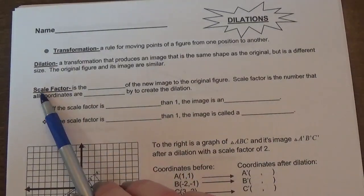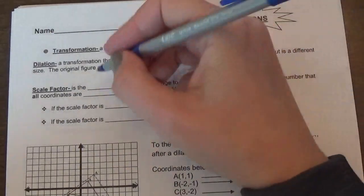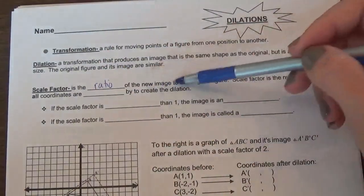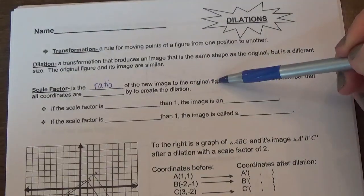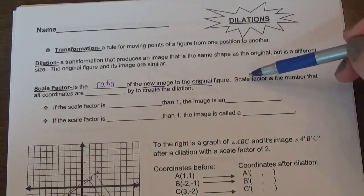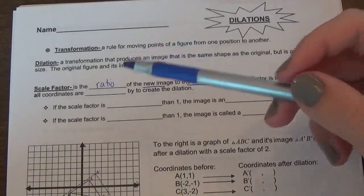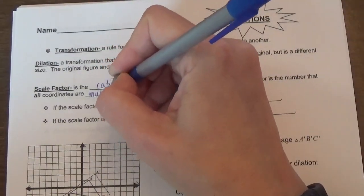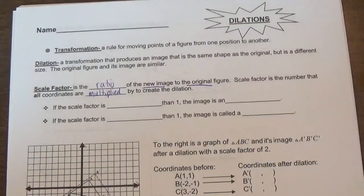A scale factor is the ratio of the new image to the original figure. It's always that order, new to original. Scale factor is the number that all coordinates are going to be multiplied by.